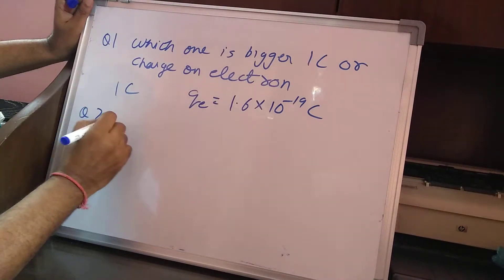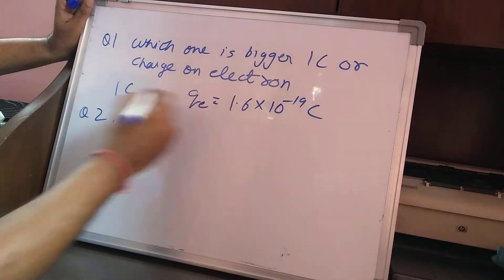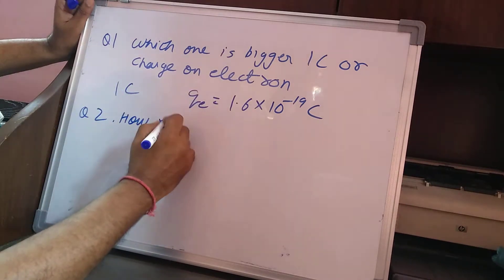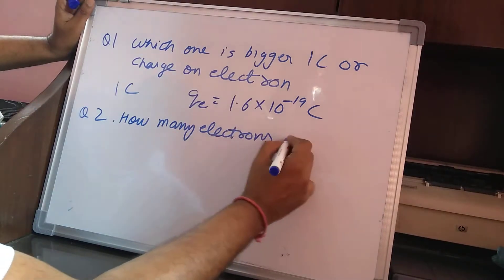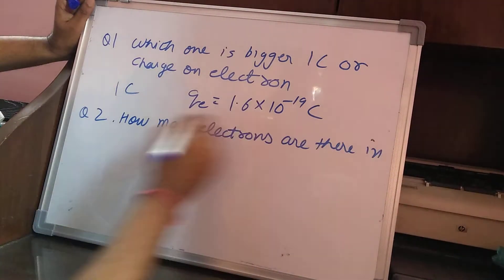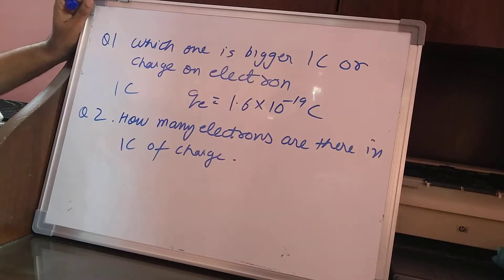So then question number 2 says that if one coulomb is bigger than charge on electron, then how many electrons are there in one coulomb of charge?